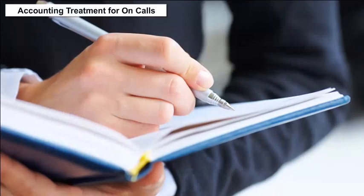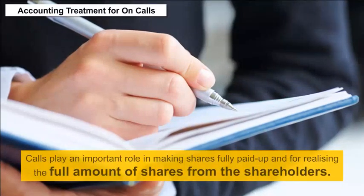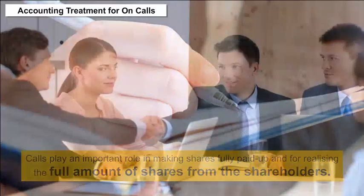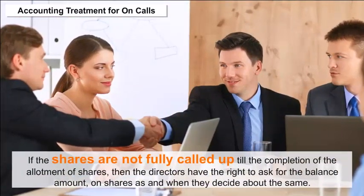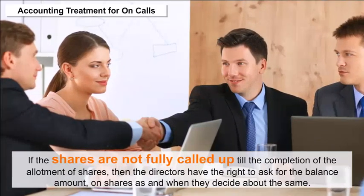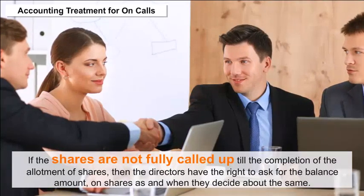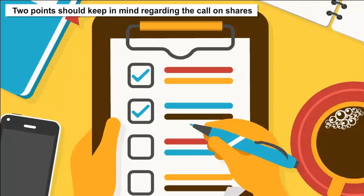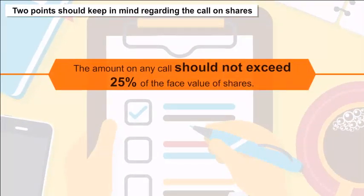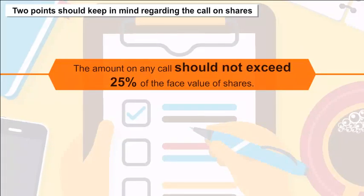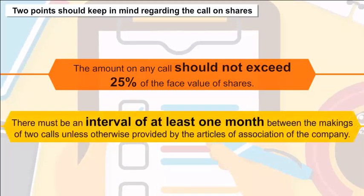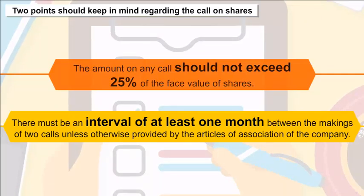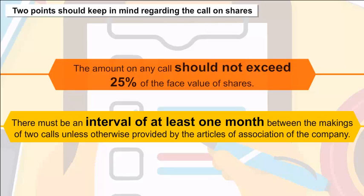Calls play an important role in making shares fully paid up and realizing the full amount from shareholders. If shares are not fully called up at the completion of allotment, the directors have the right to ask for the balance amount as and when they decide. Two points should be kept in mind: the amount on any call should not exceed 25% of the face value of shares, and there must be an interval of at least one month between two calls unless otherwise provided by the articles of association.